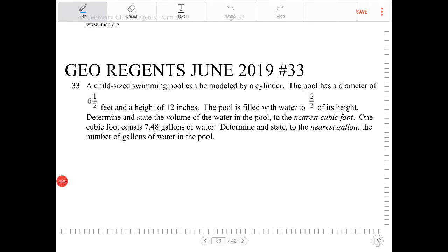A child-sized swimming pool can be modeled by a cylinder. The pool has a diameter of six and a half feet and a height of 12 inches. So I'm going to draw this.